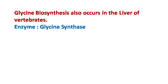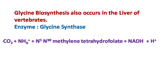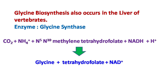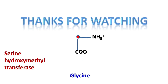Besides this reaction, the liver of vertebrates has an enzyme called glycine synthase. This enzyme uses CO2, ammonium ions, and N5-N10-methylene tetrahydrofolate along with NADH and H+ to form glycine.